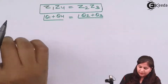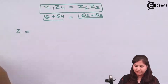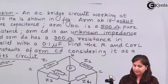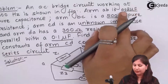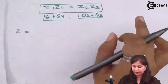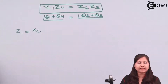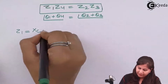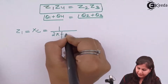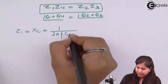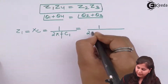First we will write the value of all the impedances. Z1 is a pure capacitance. Arm AB is a pure capacitance of 0.2 microfarad, so Z1 will be equal to XC, the capacitive reactance, which equals 1/(2πFC₁). It will be equal to 1/(2π × frequency × capacitance).